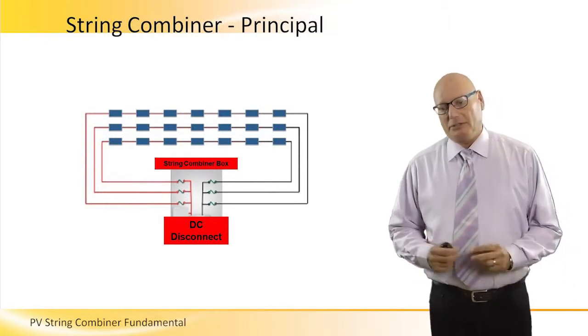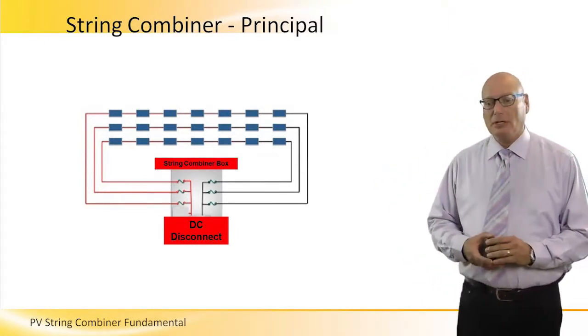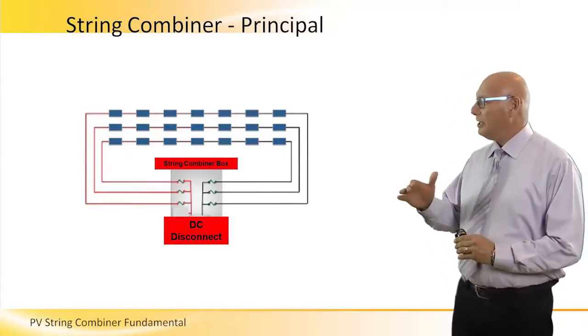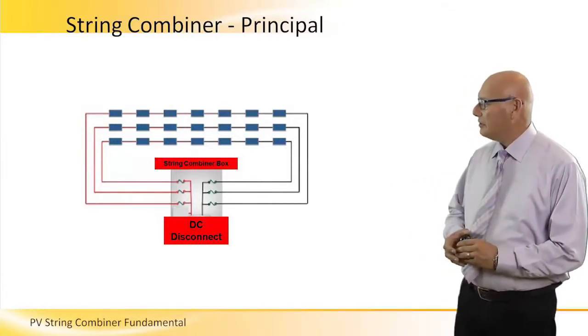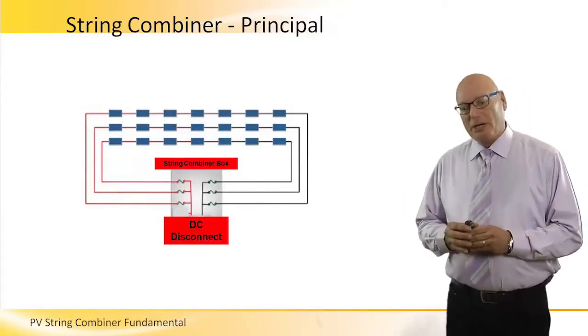Let's look at a string combiner. What we see here is basically a principal picture of a string combiner. We see three strings, each of the strings has seven panels. The strings, the three strings, are connected in parallel.